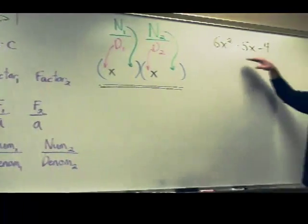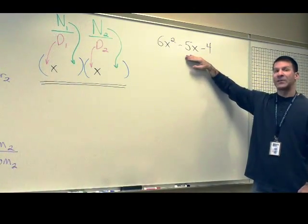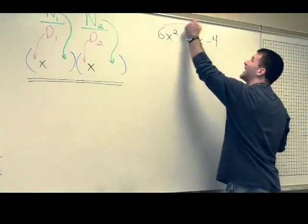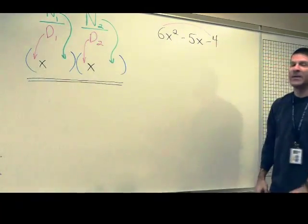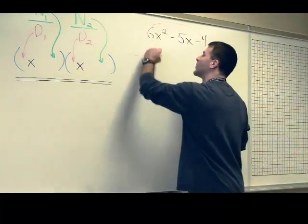Here's our example. It's my usual one: 6x squared minus 5x minus 4. Following procedure, multiply your first and last numbers. That'd be a 6 and the negative 4. Yes, the signs do matter. That gives us a negative 24.